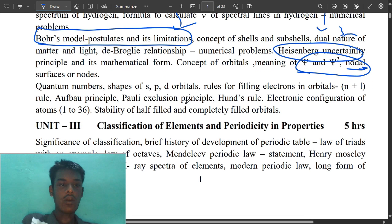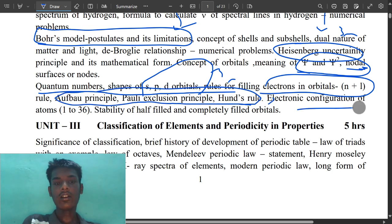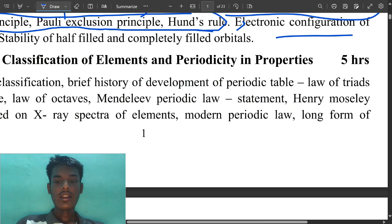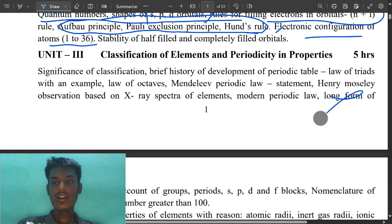Filling of electrons in orbitals, Hund's rule, Aufbau principle, Pauli exclusion principle - these three are very important. Electron configuration of 1 to 36, for example copper. They will be asking MCQ. This is classification of elements and periodicity. This is very easy.